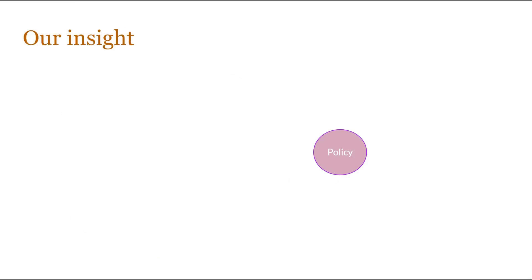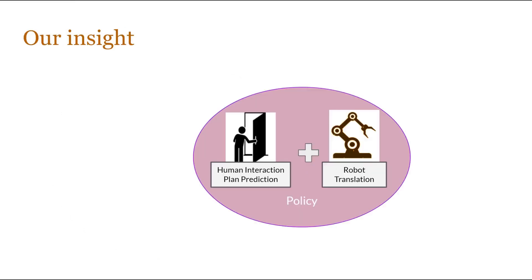Our insight is to alleviate this dependency on large robot datasets by decomposing the policy into two stages, namely a human interaction plan prediction model and a robot translation of the predicted human plan.